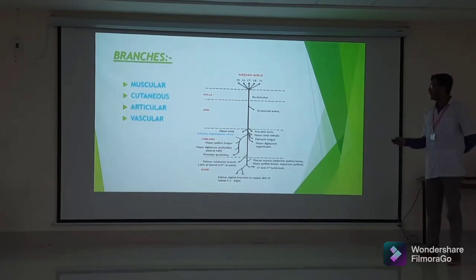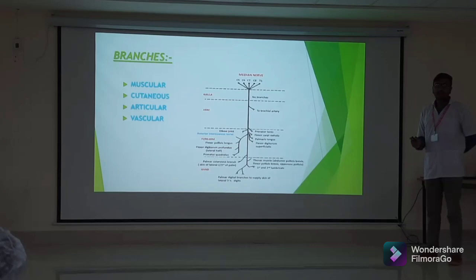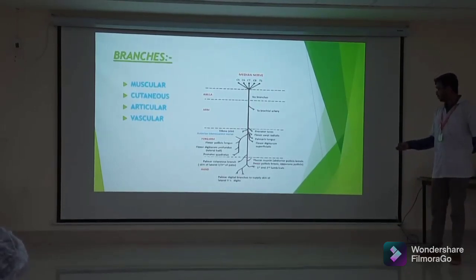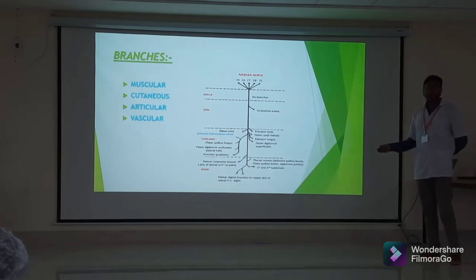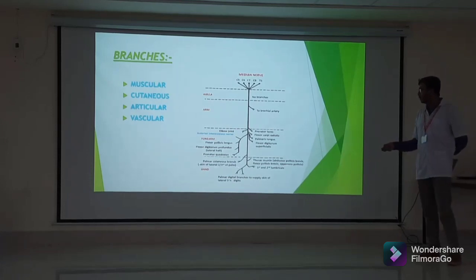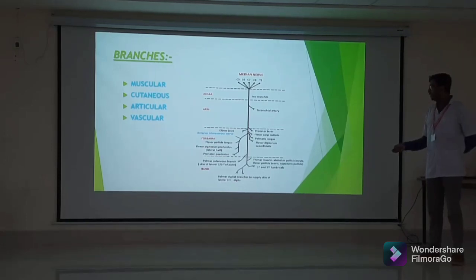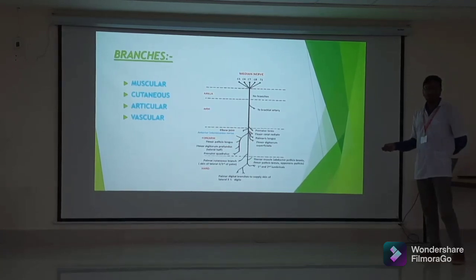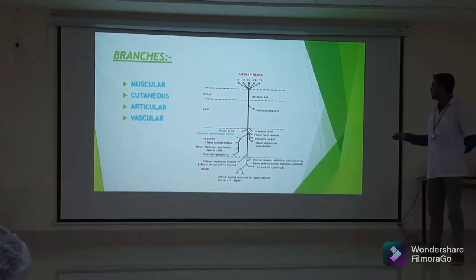For muscular supply, it supplies all flexor muscles of the forearm except flexor carpi ulnaris and the medial half of flexor digitorum profundus. In the palm it supplies the thenar muscles and the first and second lumbricals. As cutaneous branches, it gives a major palmar cutaneous branch to the skin over the thenar muscle and a palmar digital branch to the lateral three and a half digits. It gives an articular branch to the elbow joint and many joints of the hand, and a vascular branch to the brachial artery.